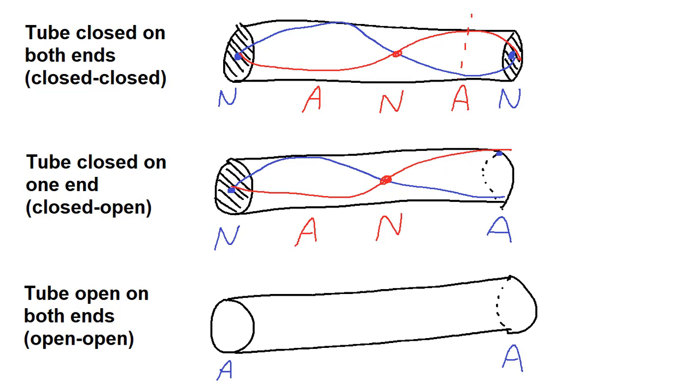And then for the tube open on both ends, I think flutes are probably the easiest one to think of, where they are open on both ends. You have to have an antinode on both of these, which means you are going to have to have at least one node here in the middle to be able to get from an antinode to an antinode.